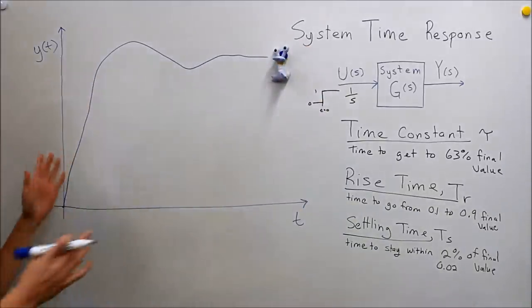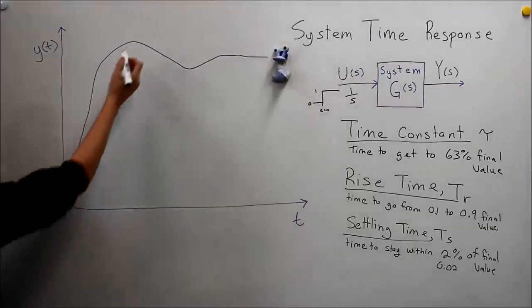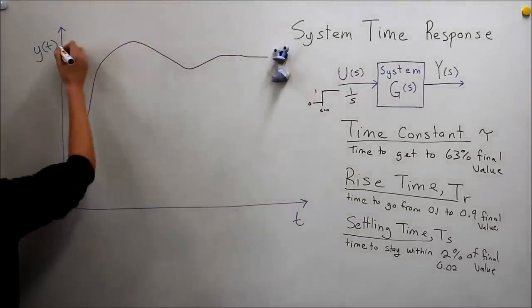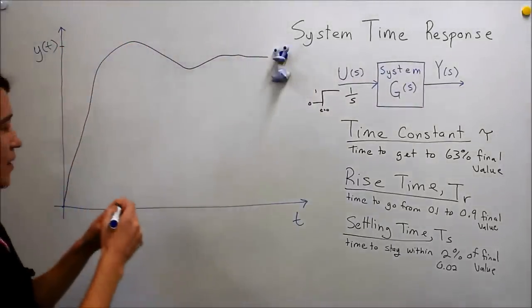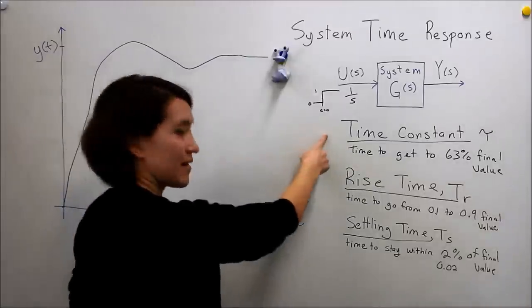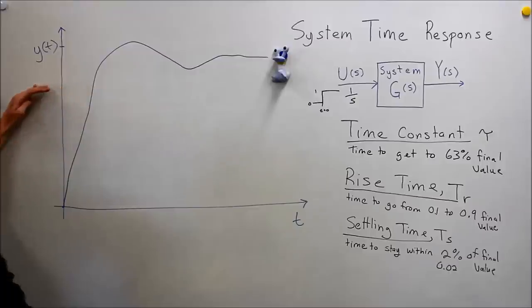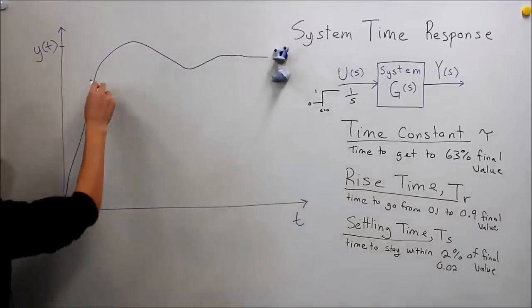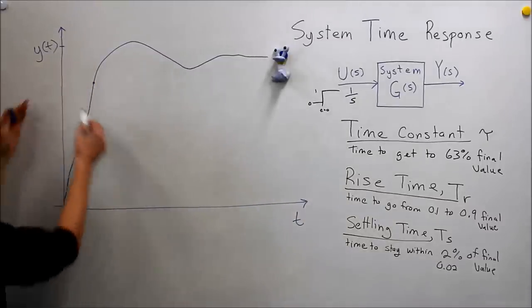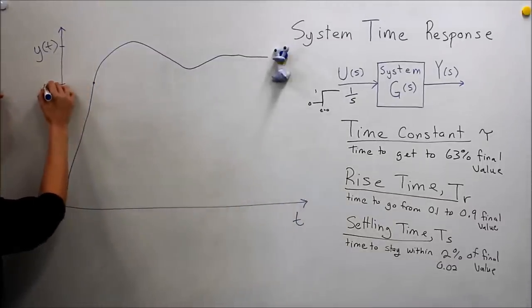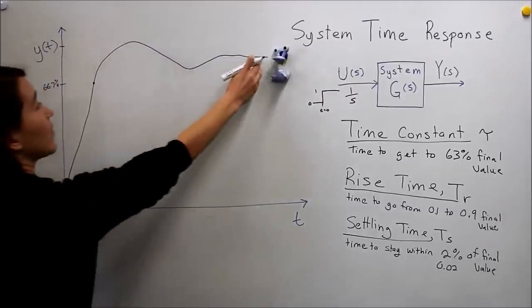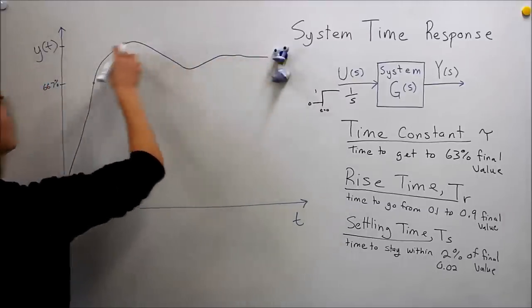And so with this system we're going to estimate here. So here's our maximum value, the peak value. And so our time constant here would be where it gets to about 60%. We're going to estimate, we're just trying to show what this value would be. Say this is approximately 66.7% of this value. So our final value here is here.